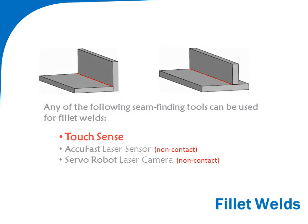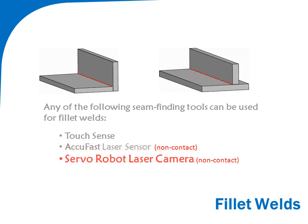We offer several tools for locating seams for fillet welds, including TouchSense — a low-cost seam finding tool that uses the welding wire as a probe to contact the work surface. AccuFast is a point laser that searches and detects the work surface when the laser reaches its programmed focal point. It's similar to touch sensing but is non-contact and significantly faster.